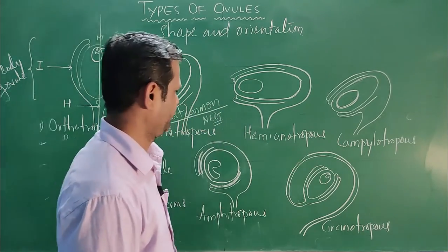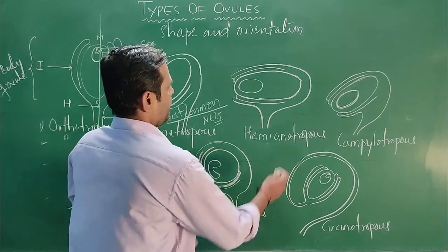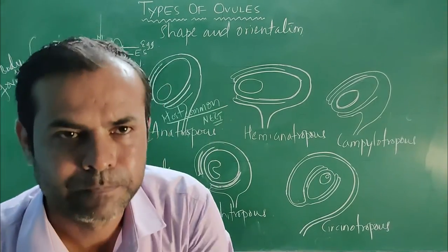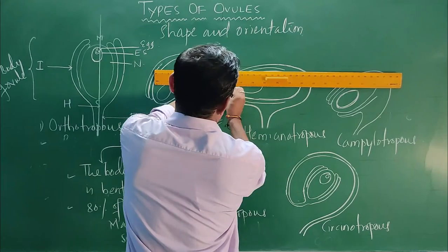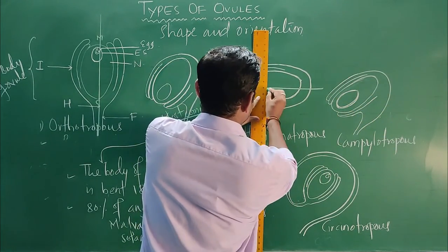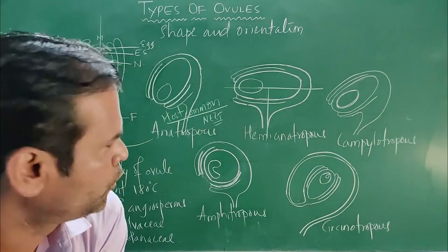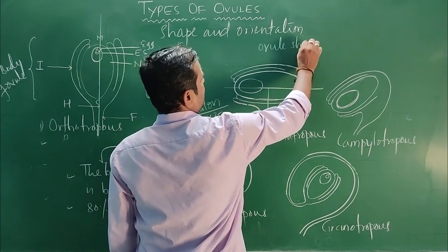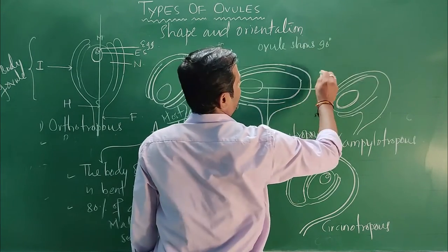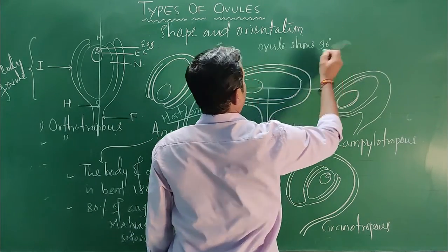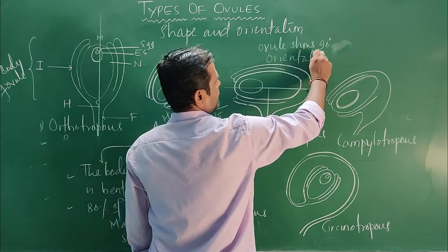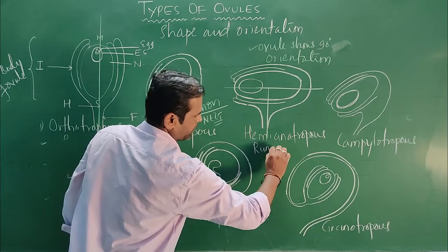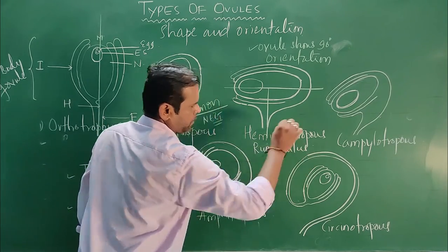The next one is the hemi-anatropous ovule. In this type, the body of the ovule shows a curvature or bending of exactly 90 degrees. This type of ovule is found in Ranunculus plants.